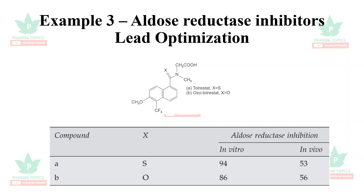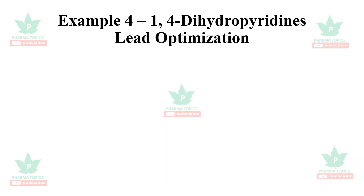The third example is aldose reductase inhibitors: tolaristat and oxo-tolaristat. From the data, when the substituent is a double-bond sulfur, both in vitro and in vivo activity increases — confirming the value of lead optimization. A fourth example involves dihydropyridines used as anti-anginal and antihypertensive drugs, including amlodipine, felodipine, and nifedipine, all derived from a common lead structure.